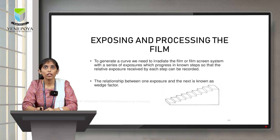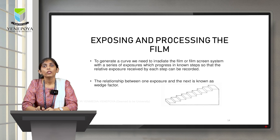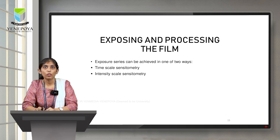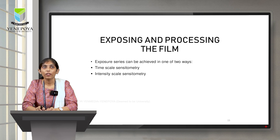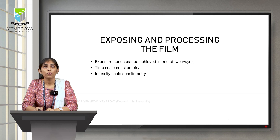For exposing and processing the film, a step wedge filter is used. The height of each step is varying, and the relationship between one exposure and the next is known as the wedge factor. The film can be exposed in two ways: time scale sensitometry, where the time of exposure is varied and KVP and MAS are kept constant; and intensity scale sensitometry, where the exposure factor is varied and the film is exposed at equal intervals of time.